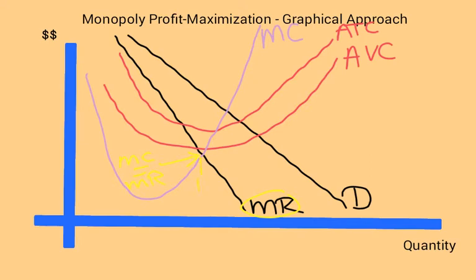So if we draw a line straight down to the quantity axis, this is the quantity where this monopolist is maximizing its profit. So let's call it QPM.